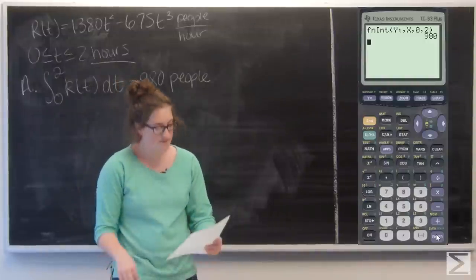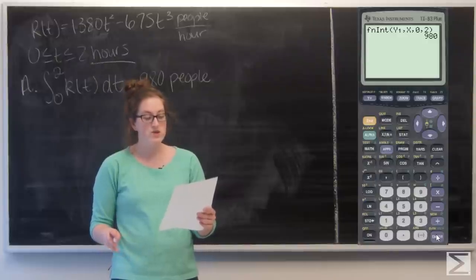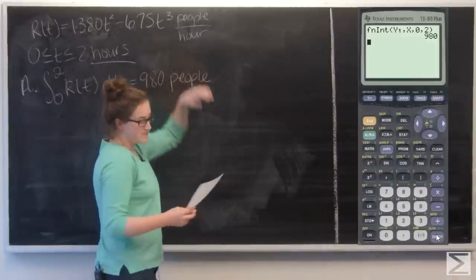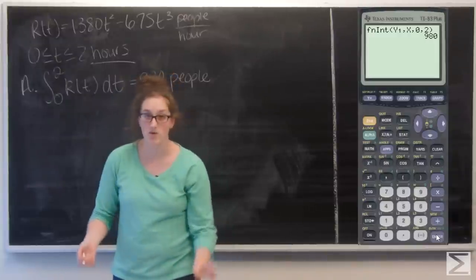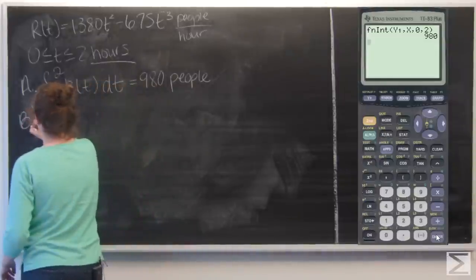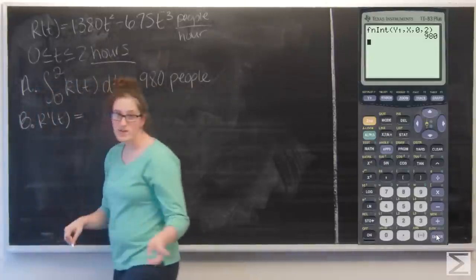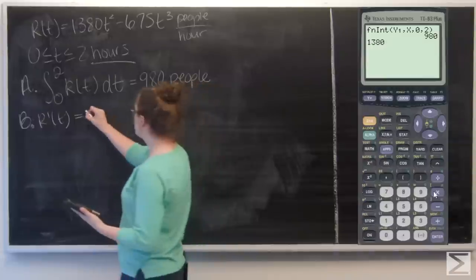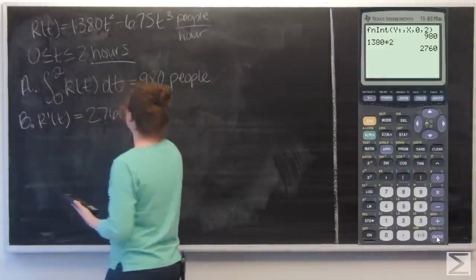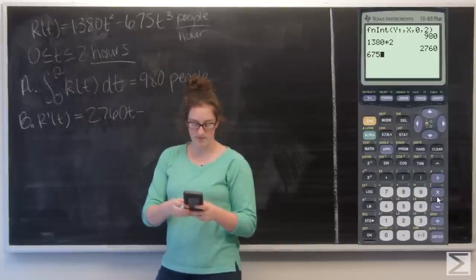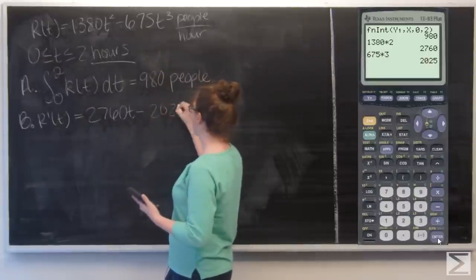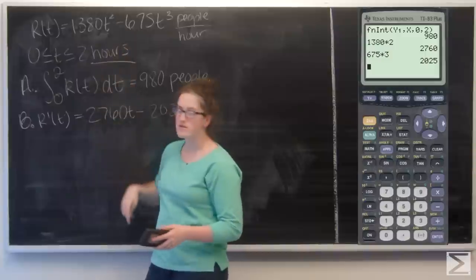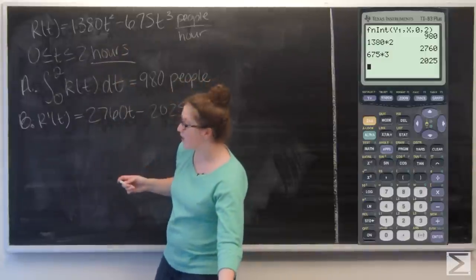Part B asks us to find the time when the rate at which people enter the auditorium is a maximum, and to justify our answer. So I'm optimizing r of t. To do that I want to find its derivative: r prime of t equals 2760t minus 2025t squared.